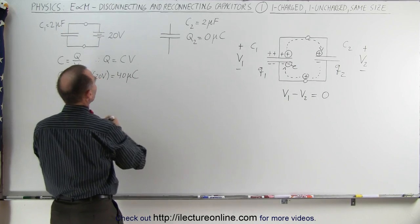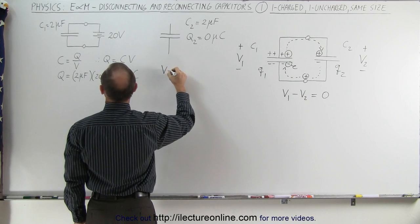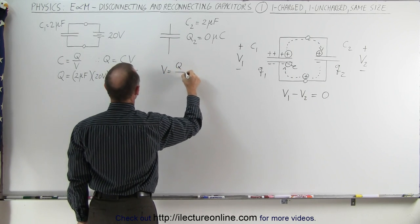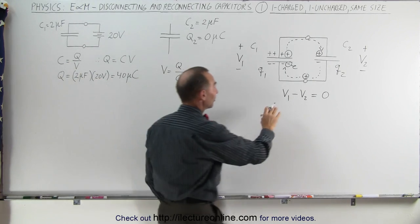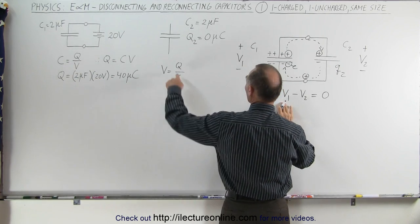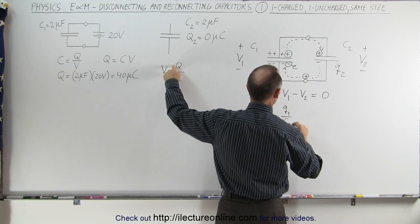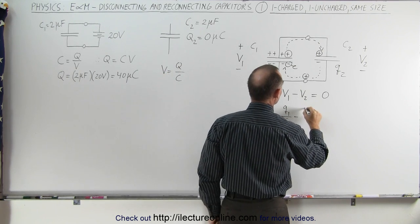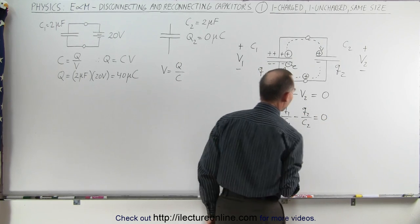Then coming back over here, we can then also say, using the definition of capacitance, that the voltage is equal to the charge divided by the capacitance. So at the steady state, what we can say here is that voltage 1 will be equal to charge 1 divided by capacitance 1 minus voltage 2, that would be charge 2 divided by capacitance 2, and that must equal zero.